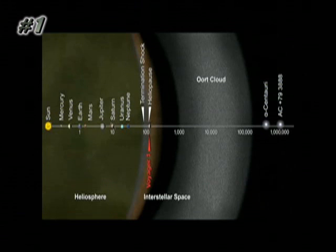But that does not, as much of the media has incorrectly interpreted, mean that it has left the solar system. Because you can see that Voyager 1 is only about 125 astronomical units away from the sun.